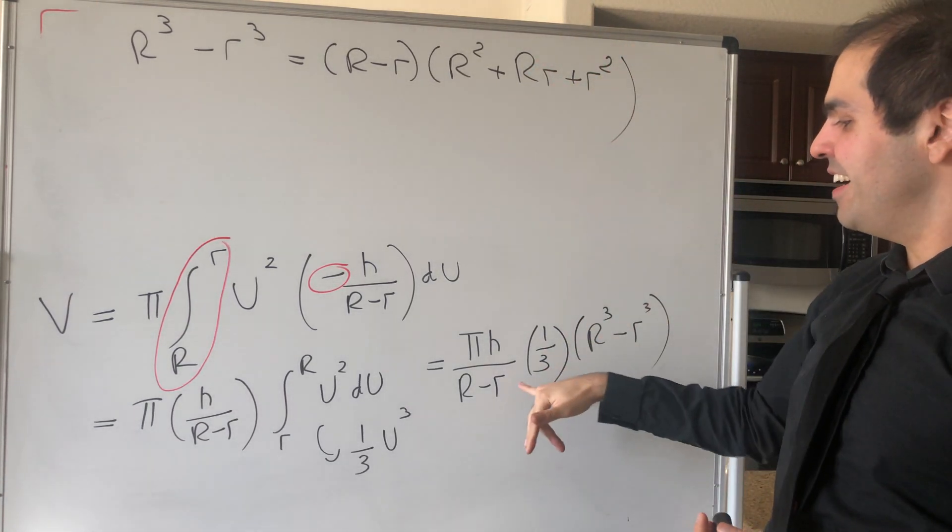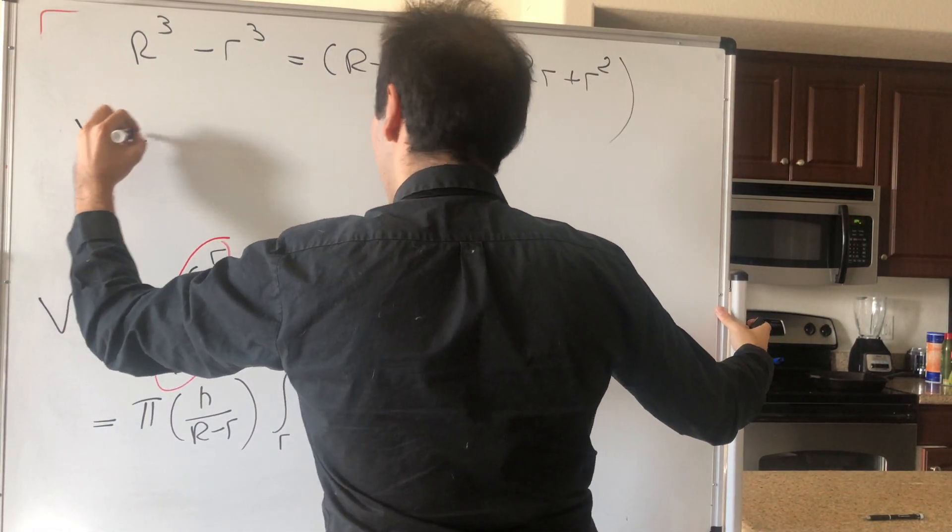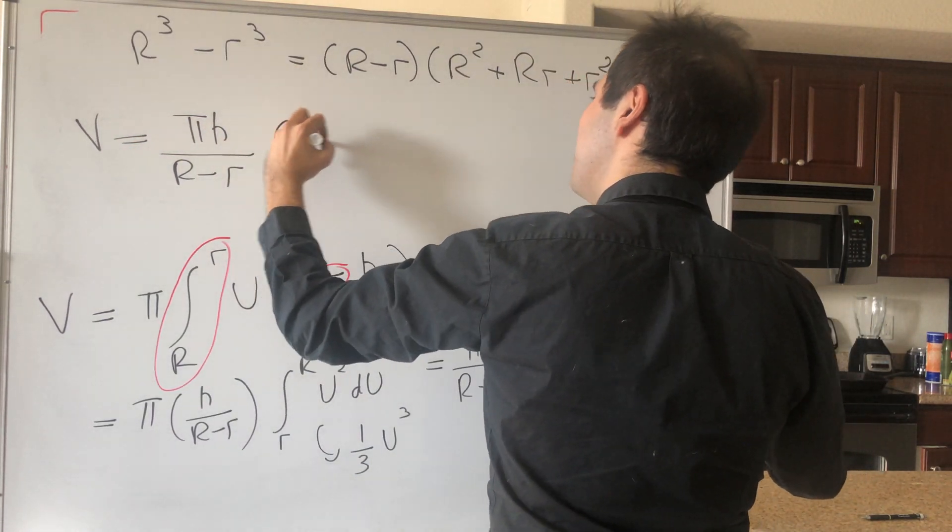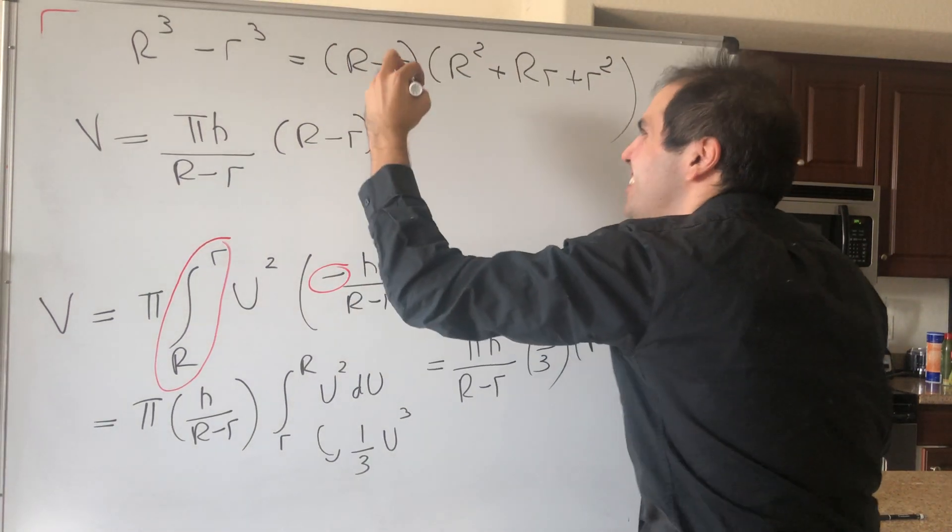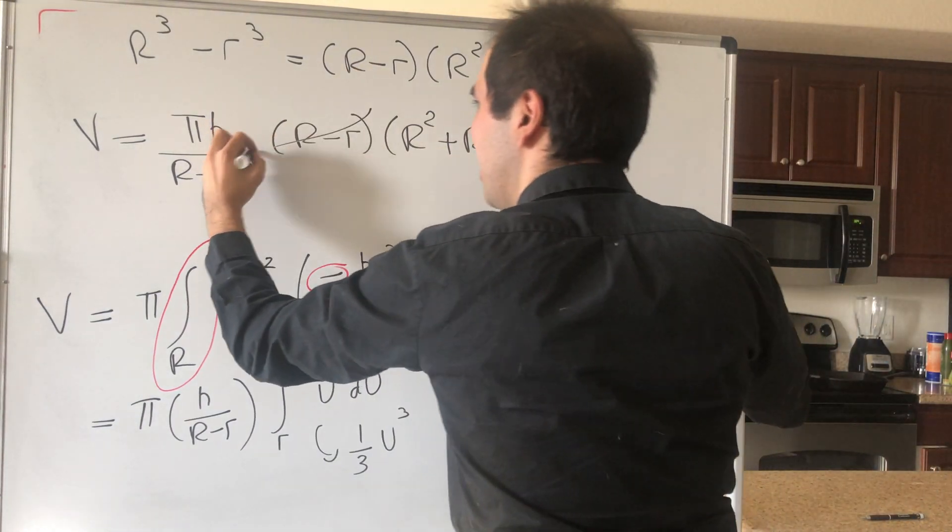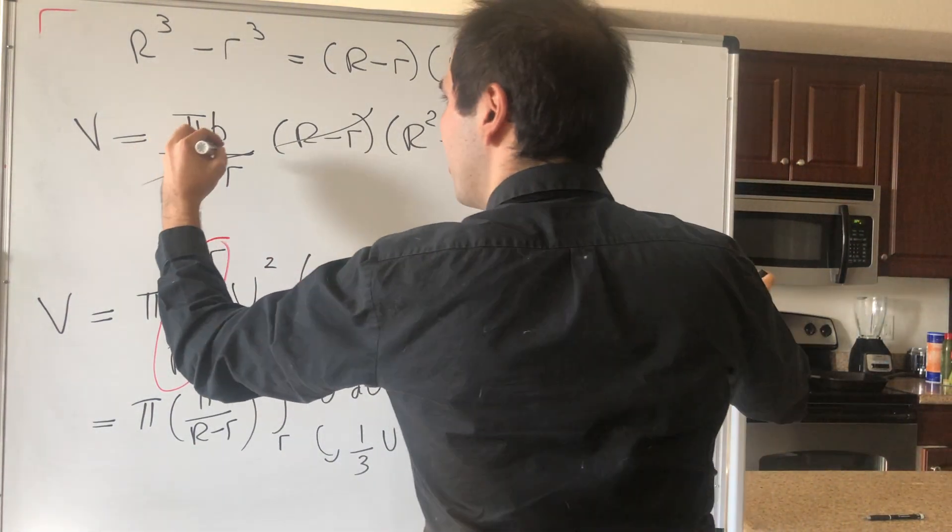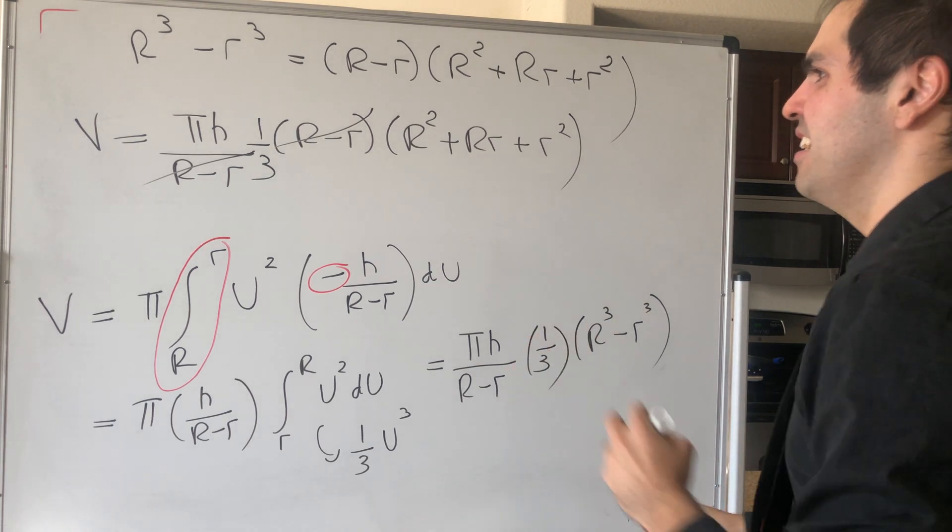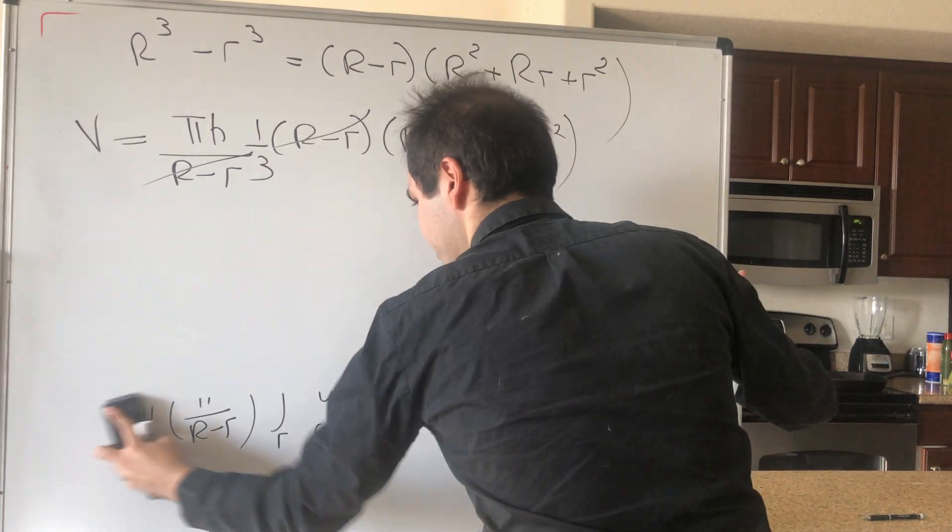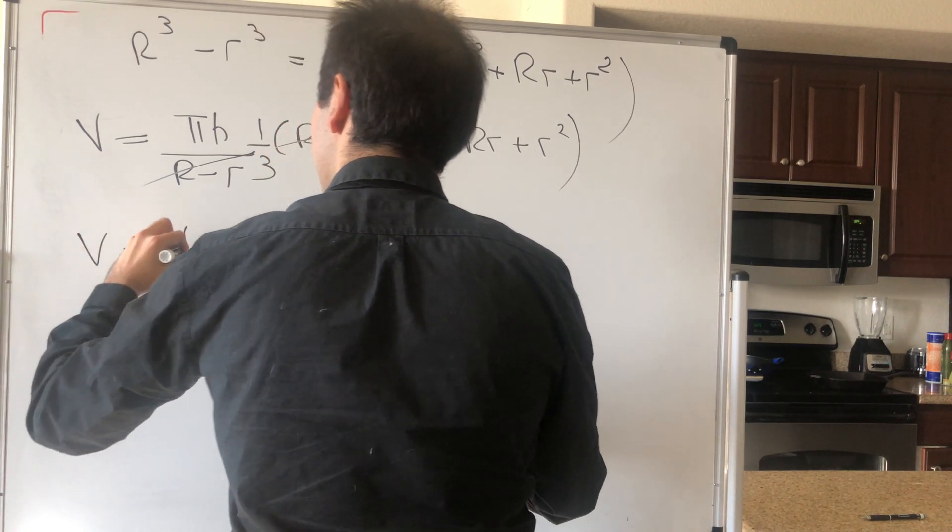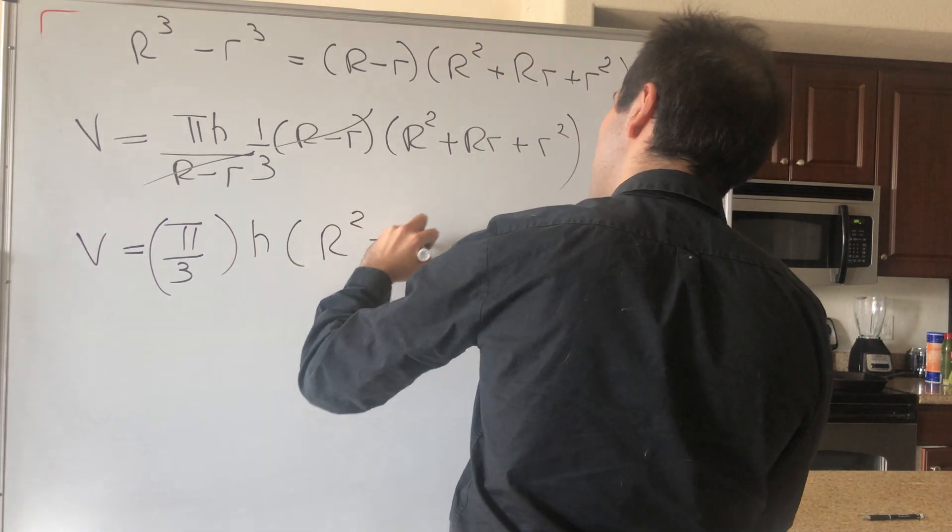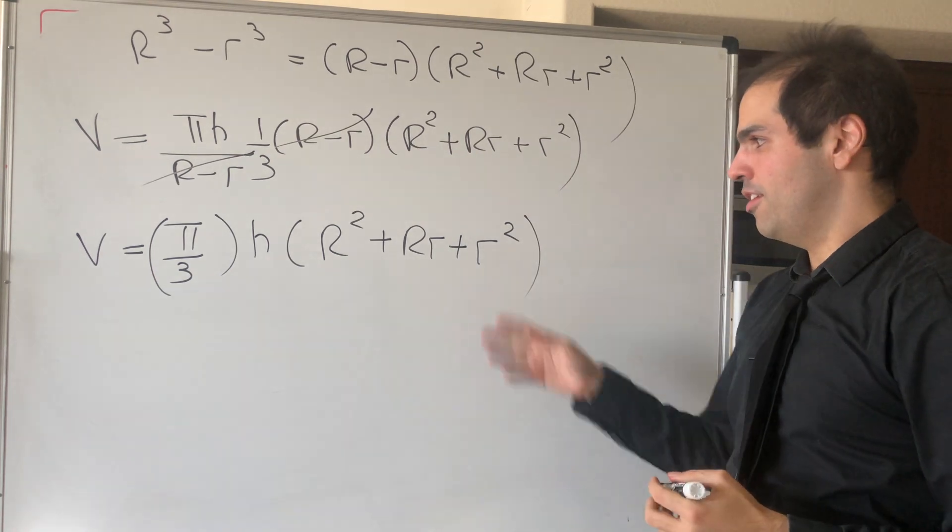And it turns out this is nice, because it'll cancel out this volume. So we get that the volume is pi h over (R minus r) times (R minus r) times (R squared plus rR plus r squared). And this cancels out, and in the end, and I think I forgot about the one-third. And in the end, what do you get? It's pi over three h times (R squared plus rR plus r squared).